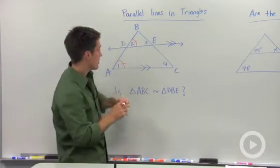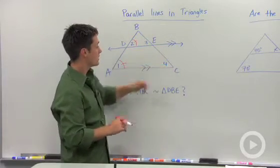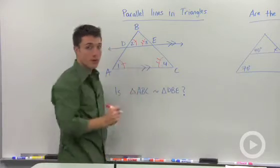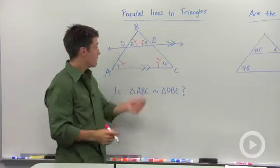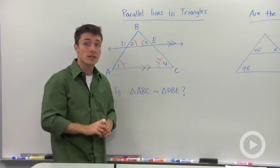In a similar argument, BC is a transversal, where we have two parallel lines, which means angles 3 and 4 must be congruent to each other. And right now we have two angles in each of these triangles, which is enough to say that they must be similar.